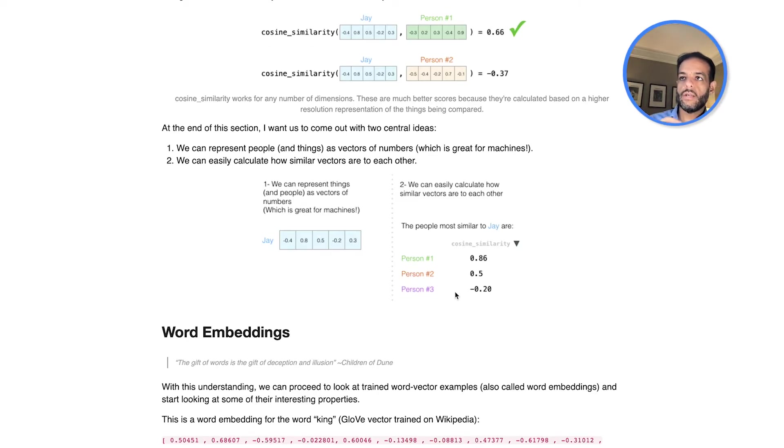And with that, we establish sort of some of the main intuitions of embedding. So one is that a lot of things, even people, can be represented by strings of numbers. The more information you want to pack, the more you want to pack into the embedding, you need a larger size embedding and some way of representing that information. And we get to that a little bit later.